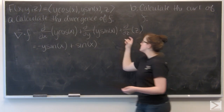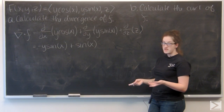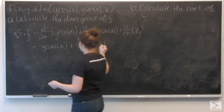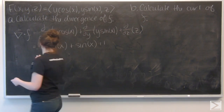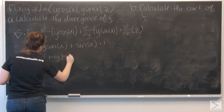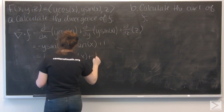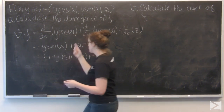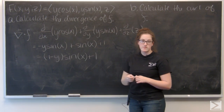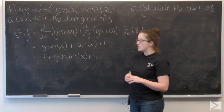The partial derivative of z with respect to z is easy — that's just 1. So I can combine my sine terms and get the divergence of f to be 1 minus y sine of x, plus 1.